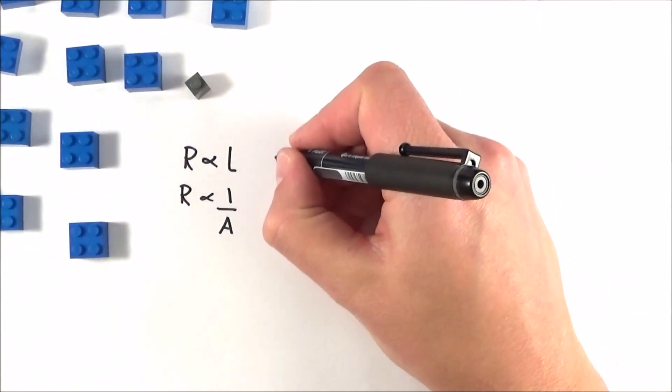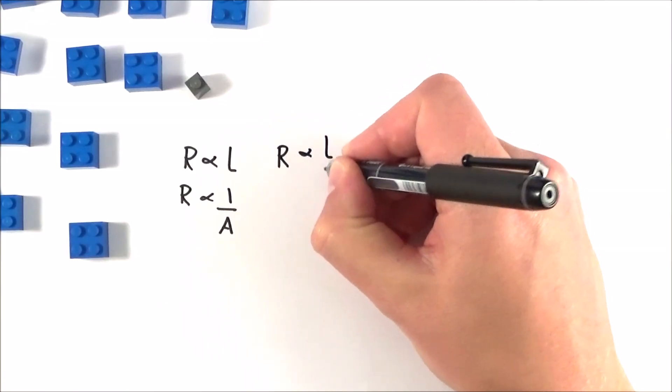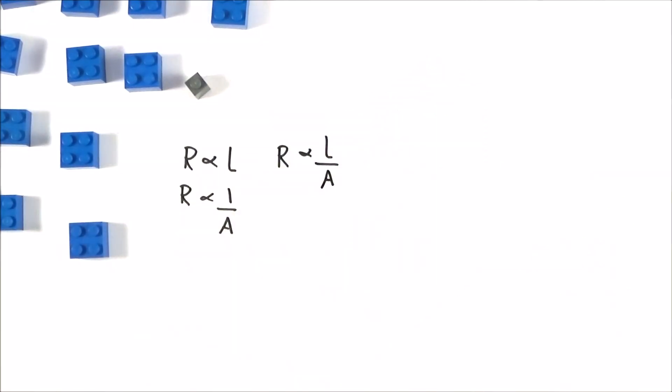So bringing this all together, what we can say is that the resistance of an object is proportional to the length and inversely proportional to area.